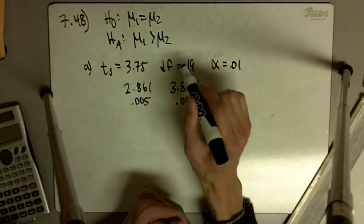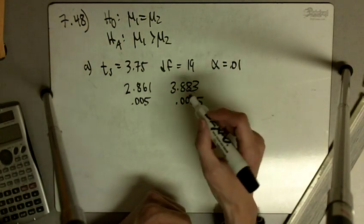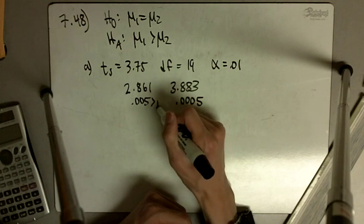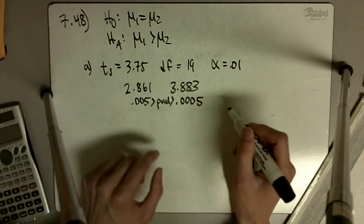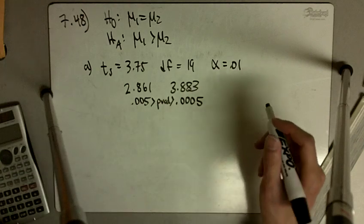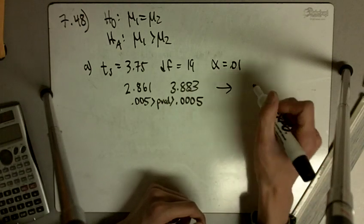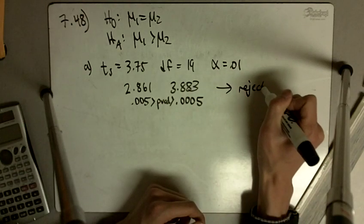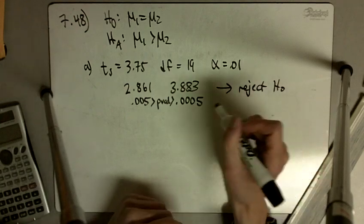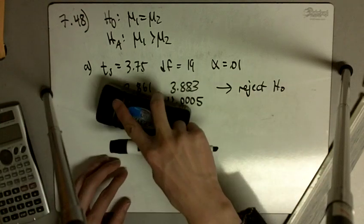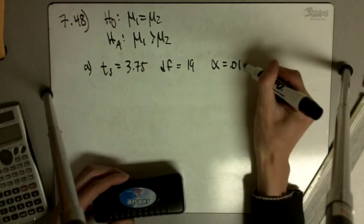Okay, and because this is just a one-sided test, we're not doubling anything, so our p-value is somewhere in between here, and these numbers are both below 0.01, so we reject the null hypothesis. So part A leads us to reject.